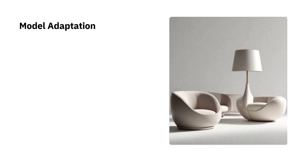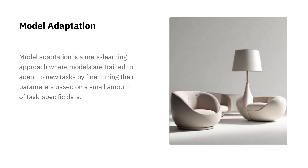Model adaptation is an essential concept in meta-learning. It refers to training models to quickly adjust their parameters when presented with a new task, using only a small amount of data which is specific to the task. This allows models to learn intricate patterns, improve their precision and boost their speed when dealing with different tasks.